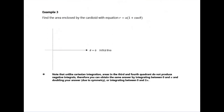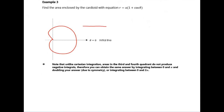This one asks us to find the area enclosed by the cardioid with equation r equals A times one plus cos theta. An important thing to realise is that areas below the initial line are not negative in polar integration - it's not really below, it's just further around the axis. So we're going to integrate between zero and two pi. We could also do zero to pi and double it because it's symmetrical - either approach should give the same answer.